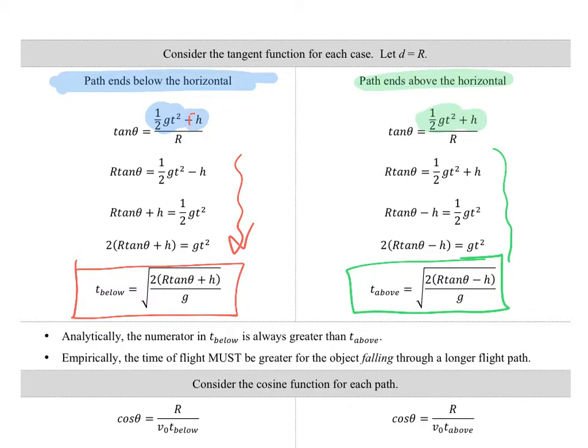So analytically, like I say right here, the numerator in the time below has to be greater because I'm adding here versus subtracting there. So the mathematics of this tells me that the time of flight has to be greater for the object falling through a longer flight path. If it misses the ground, it's going to travel through the air for a longer time.